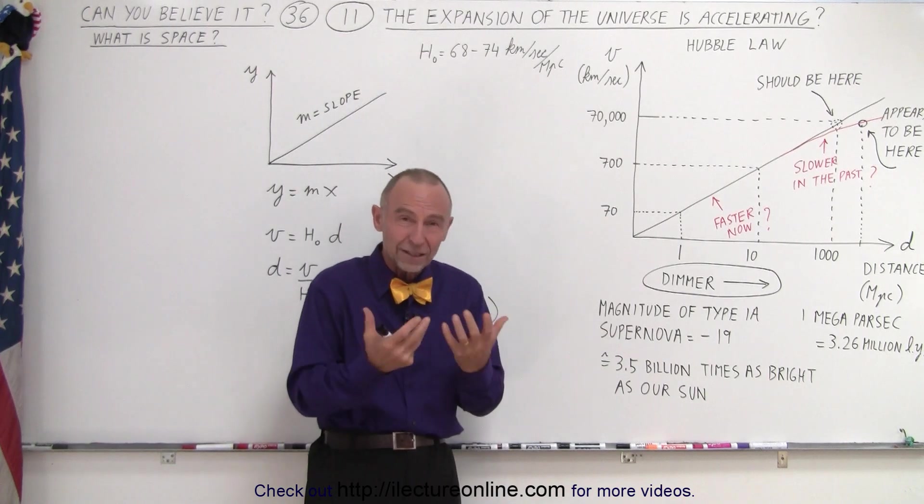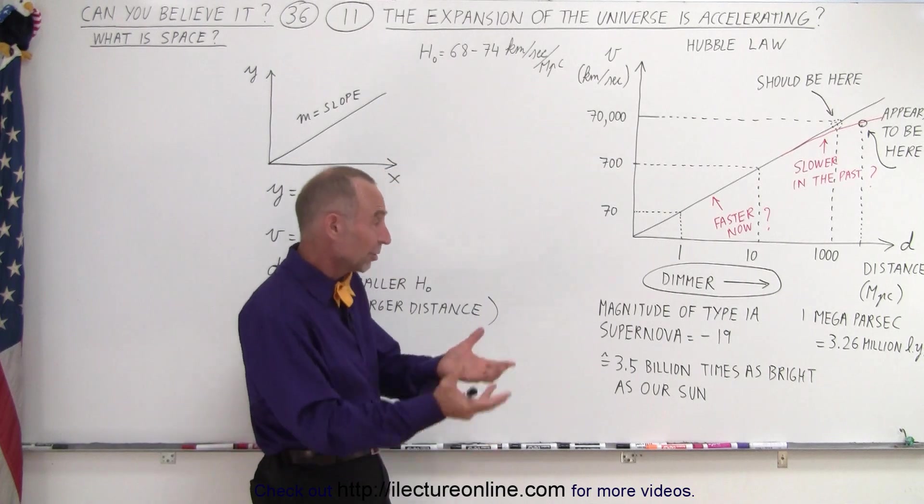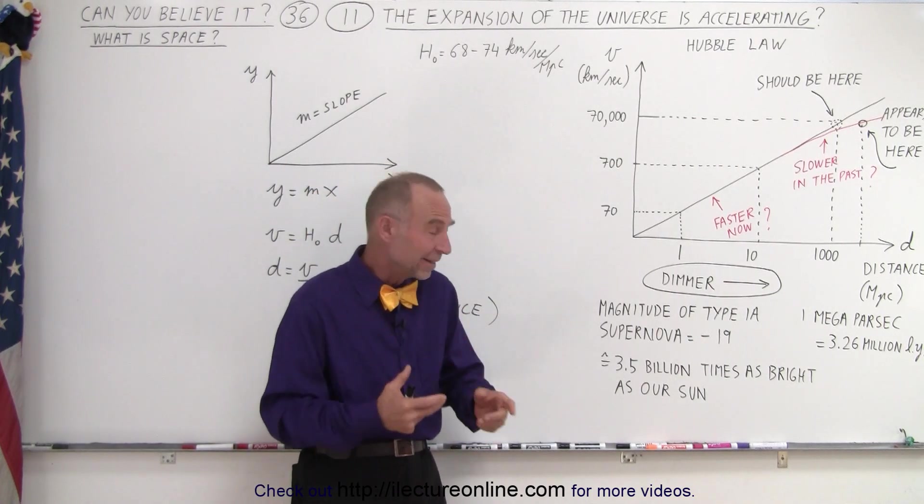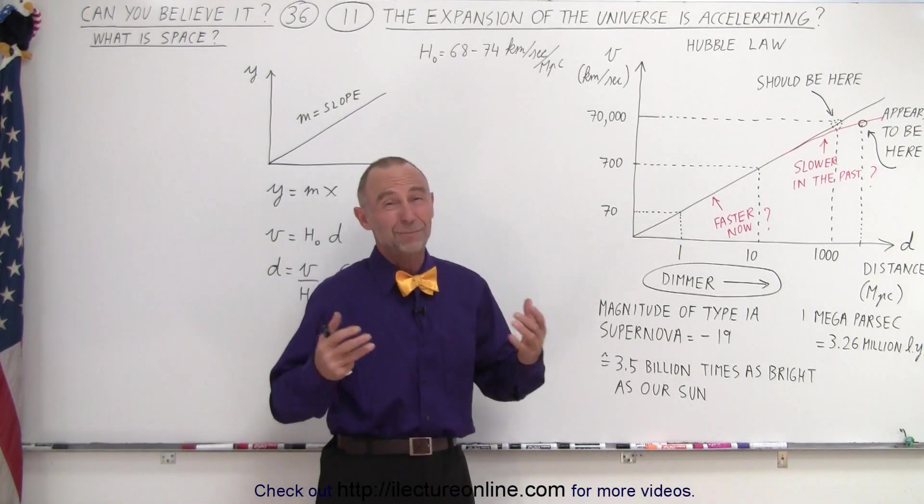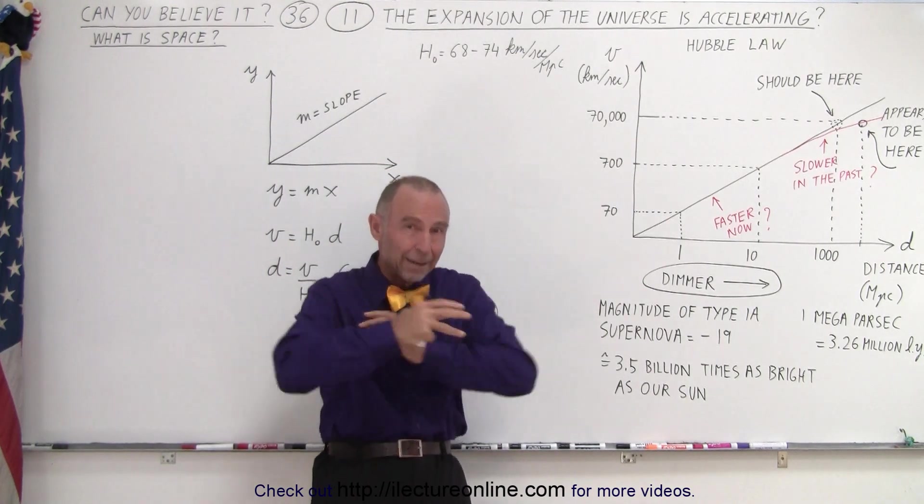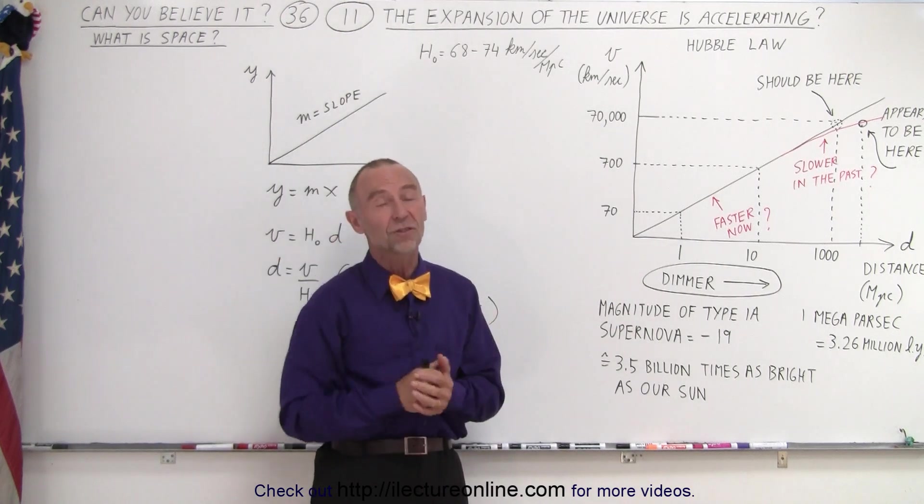The magnitude of that explosion is minus 19. To non-astronomers that may not mean much, but compared to the sun, it's equivalent to the light from three and a half billion suns. Can you imagine the light from three and a half billion suns in the same location? That would be absolutely enormous.